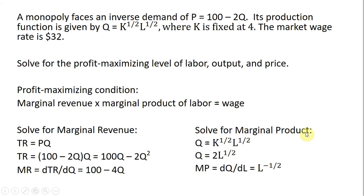Next, let's solve for the marginal product of labor. The first thing we want to do is take this production function and plug 4 into it. We're in the short run, so capital is fixed. Plugging 4 in for K and then taking the square root of it, our production function simplifies to Q equals 2L to the 1/2. To get marginal product of labor, we take the derivative with respect to L. Doing that, we get L to the minus 1/2 power.